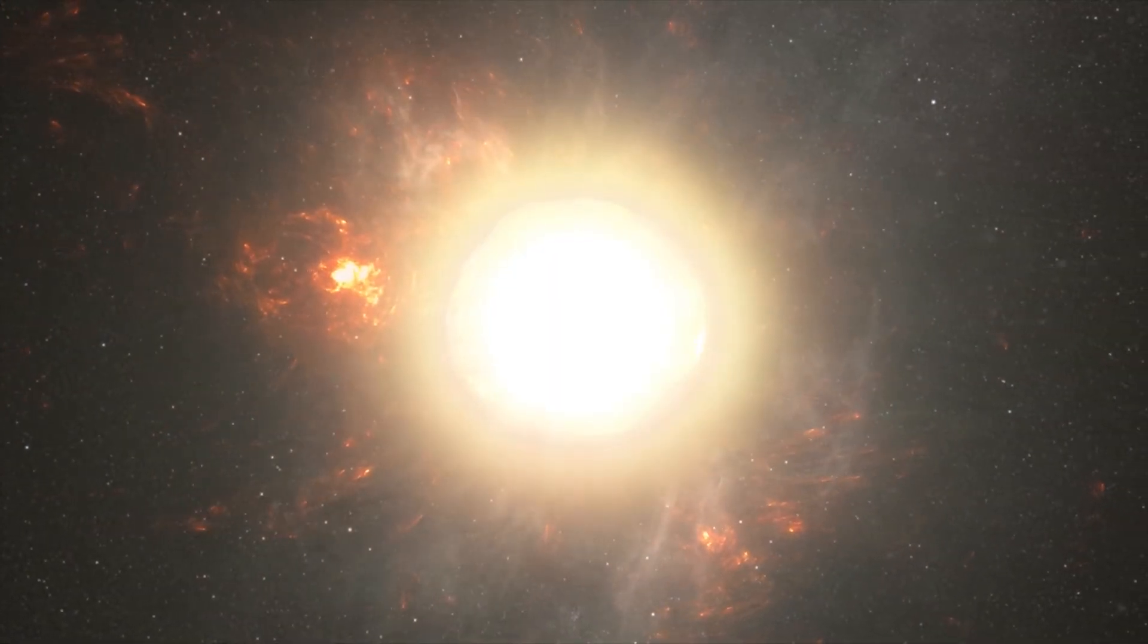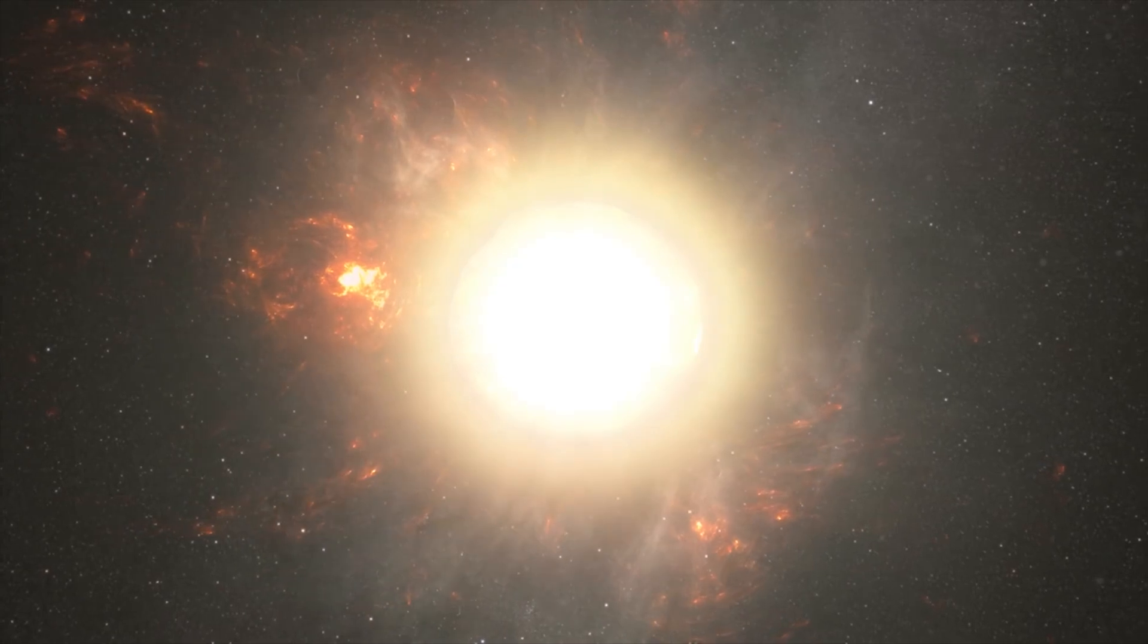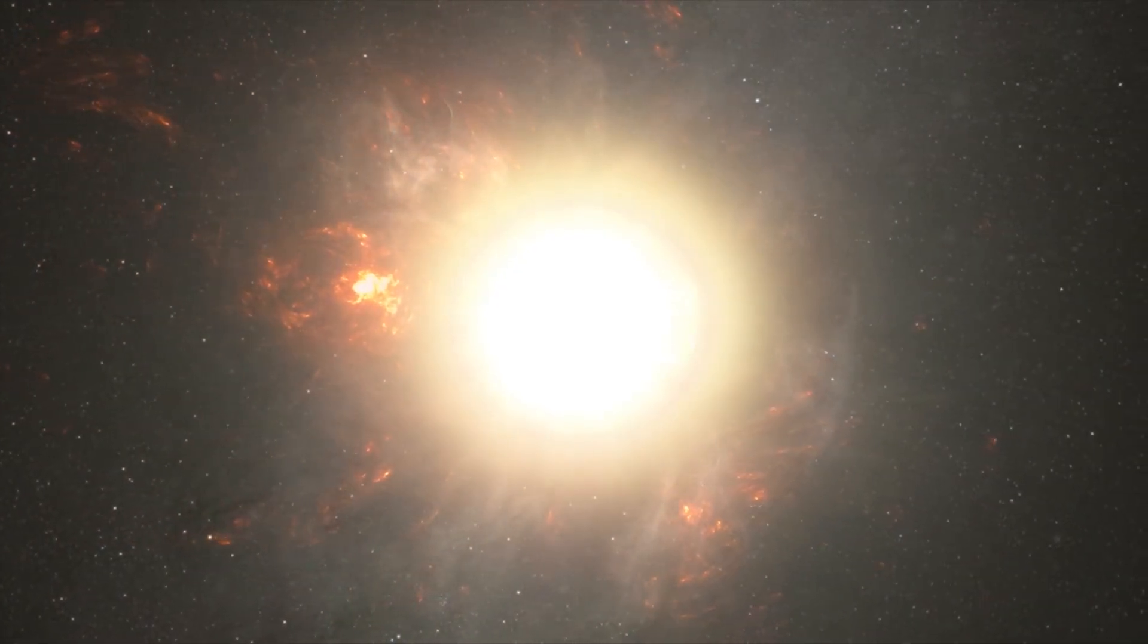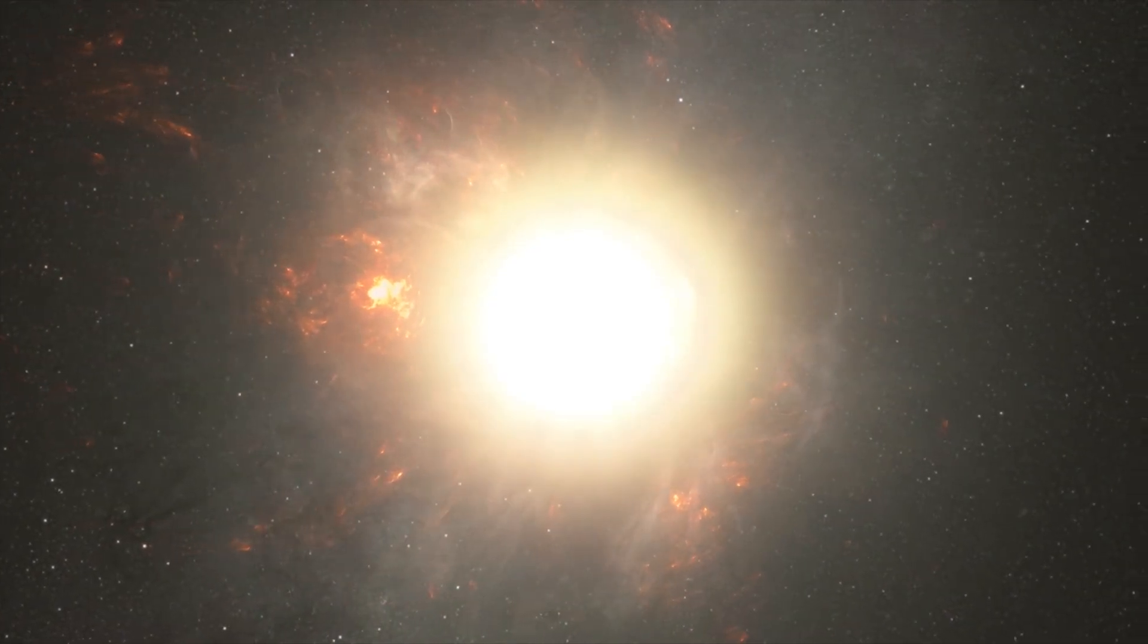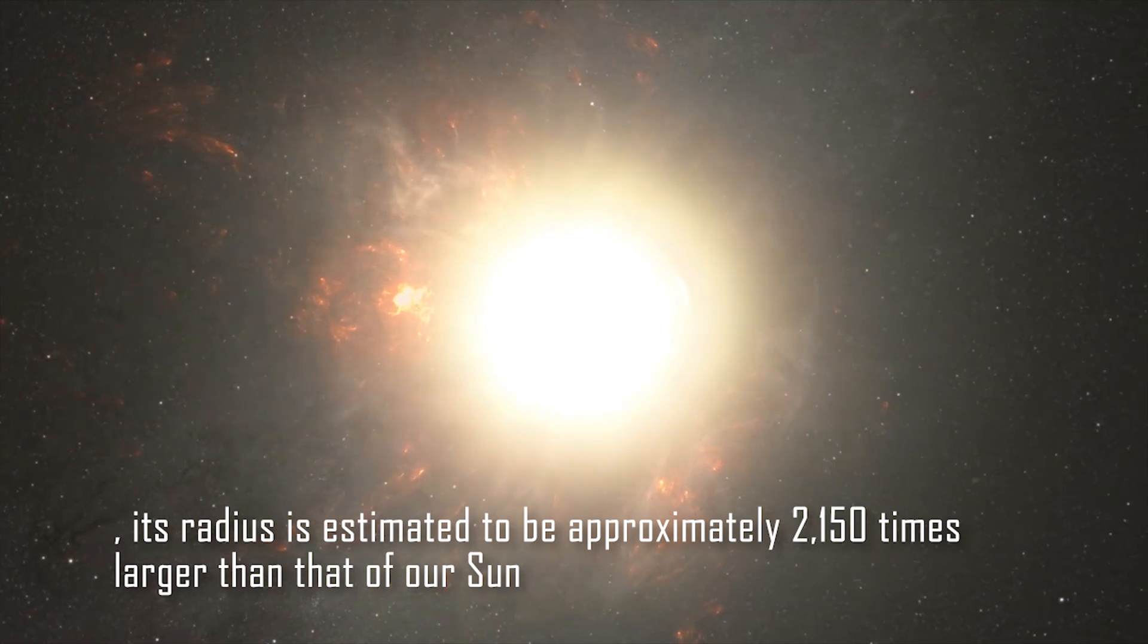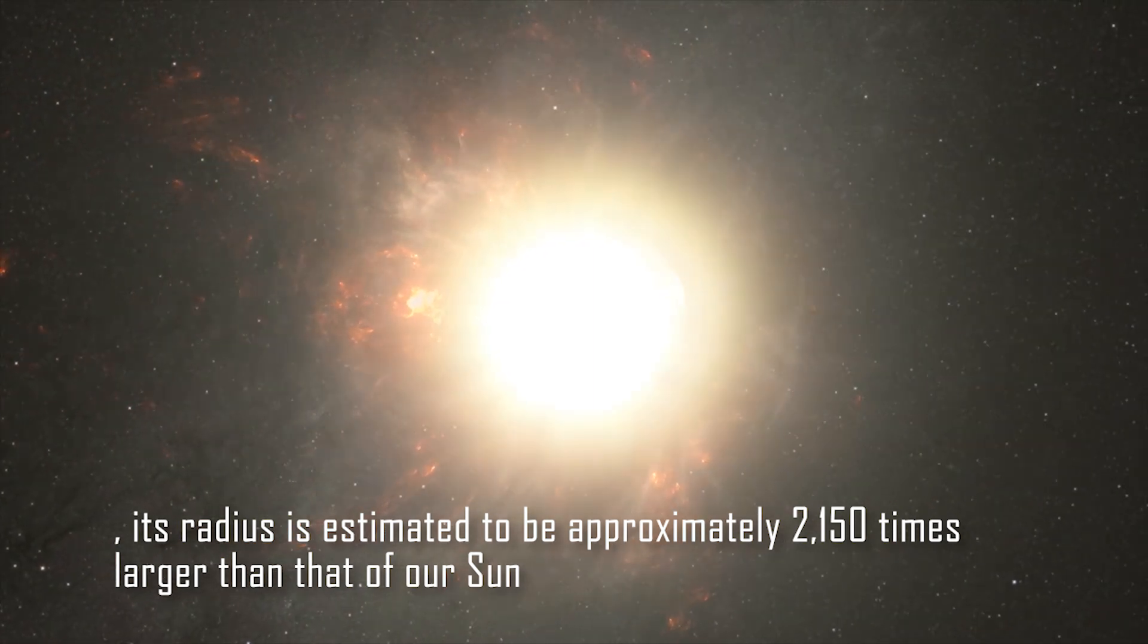Now, let's dig into some technical details. The radius of a star is a measure of its size, specifically the distance from its core to its outer edge. In the case of Stevenson 2-18, its radius is estimated to be approximately 2150 times larger than that of our sun.